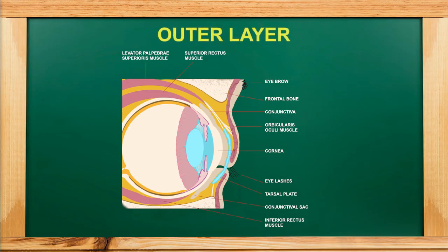The outer layer of the eye is the sclera — the white part, or the white of the eye. The posterior 5/6 of the eyeball will be the sclera, and it is made of fibrous tissue.